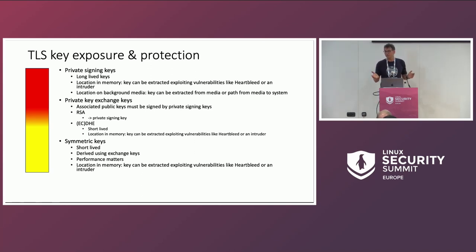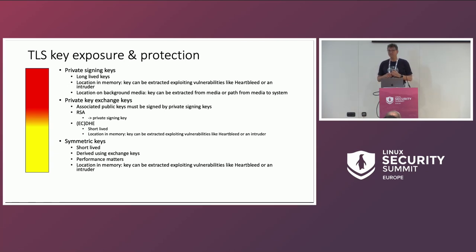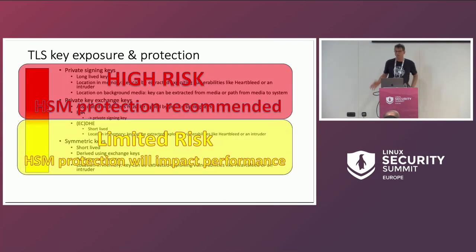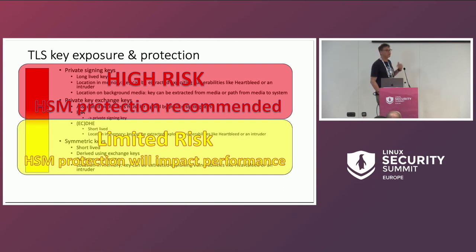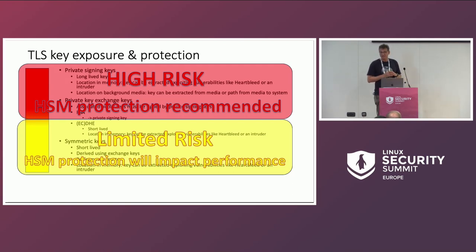Why is performance an issue? Asymmetric keys are slow, and going to an HSM is also slow. If you want to run each AES computation on an HSM, it involves I/O to an external device. Therefore, we have two groups of keys: high-risk keys where I strongly recommend HSM protection, and keys with limited risk and limited impact — low-risk keys. I think it's perfectly fine to use those as plaintext keys and have them in memory while your connection is open.